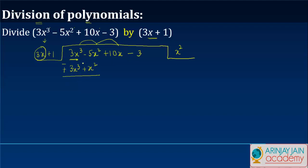Now, this plus becomes minus, this plus becomes minus, this gets knocked off, I get minus 5 plus minus 1, which is minus 6x square. I bring down plus 10x over here.